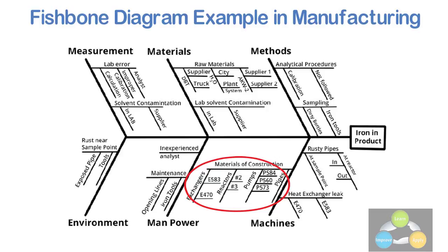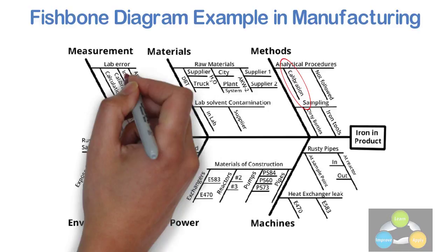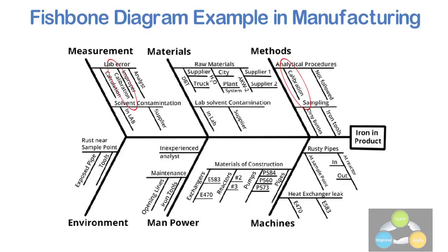Note down, some ideas appear in two different places. For example, calibration shows up under methods as a factor in the analytical procedure and also under measurement as a cause of lab error. Iron tools can be considered a methods problem when taking samples or a manpower problem with maintenance personnel.